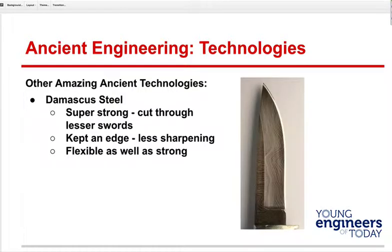Damascus steel is super famous — super strong, kept an edge remarkably long. You could hit a rock with it and it stayed sharp. It's flexible as well as strong. They believe the materials used when forged created nanotubules. The blacksmiths would forge lots of swords and keep the ones meeting the Damascus steel definition. This technique was lost around 1750 — if you buy something called Damascus steel today, it's like it but it's not.